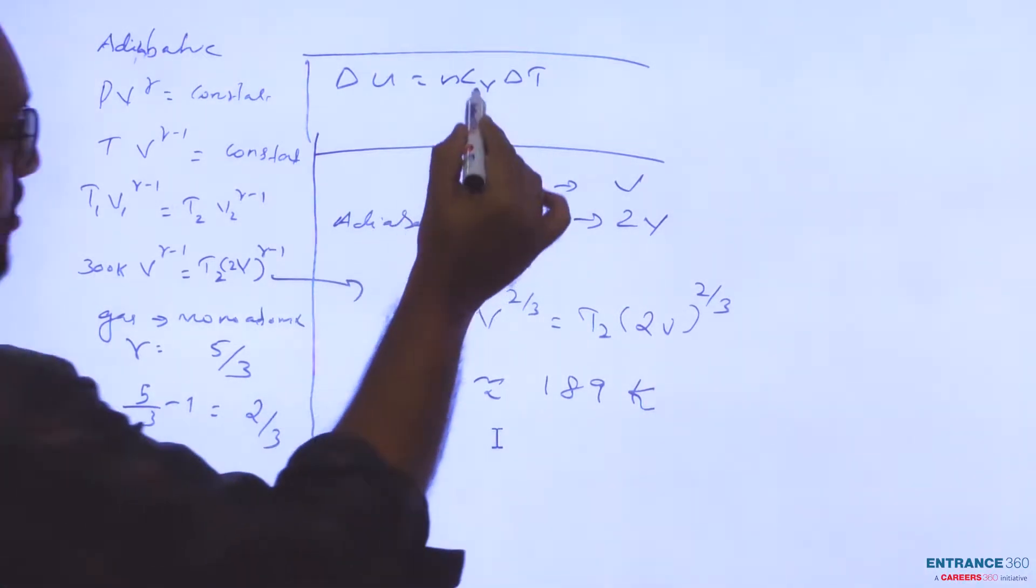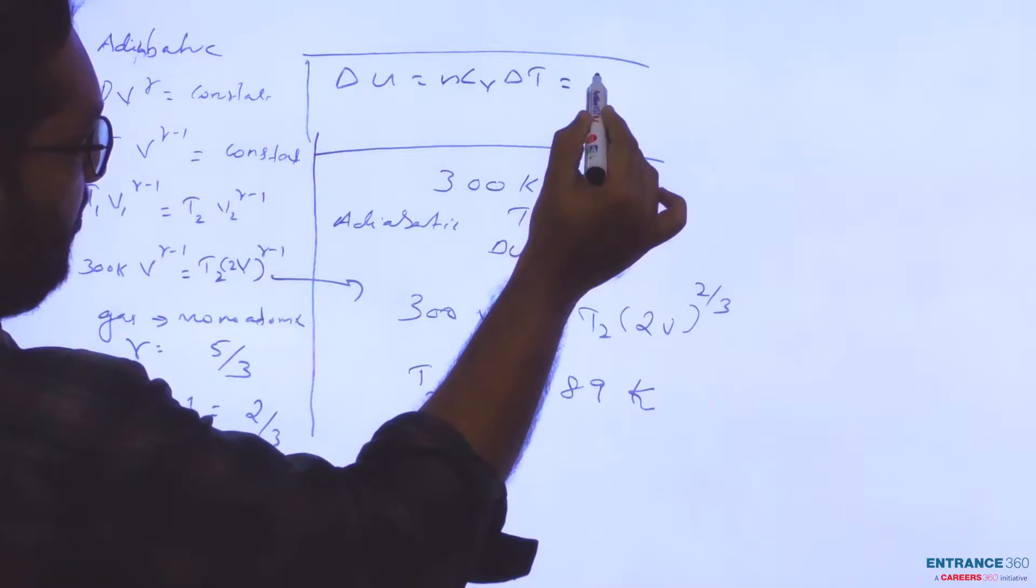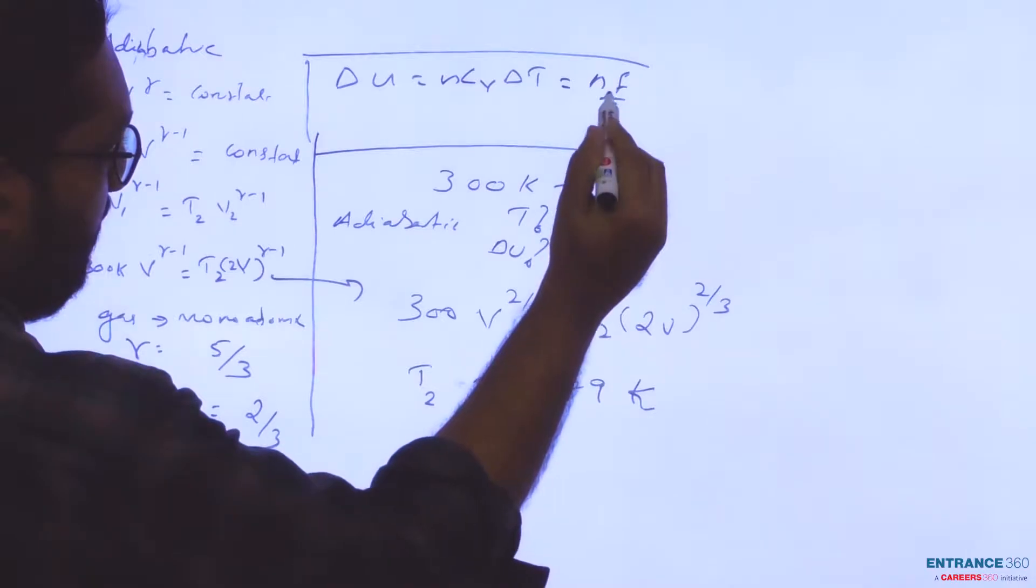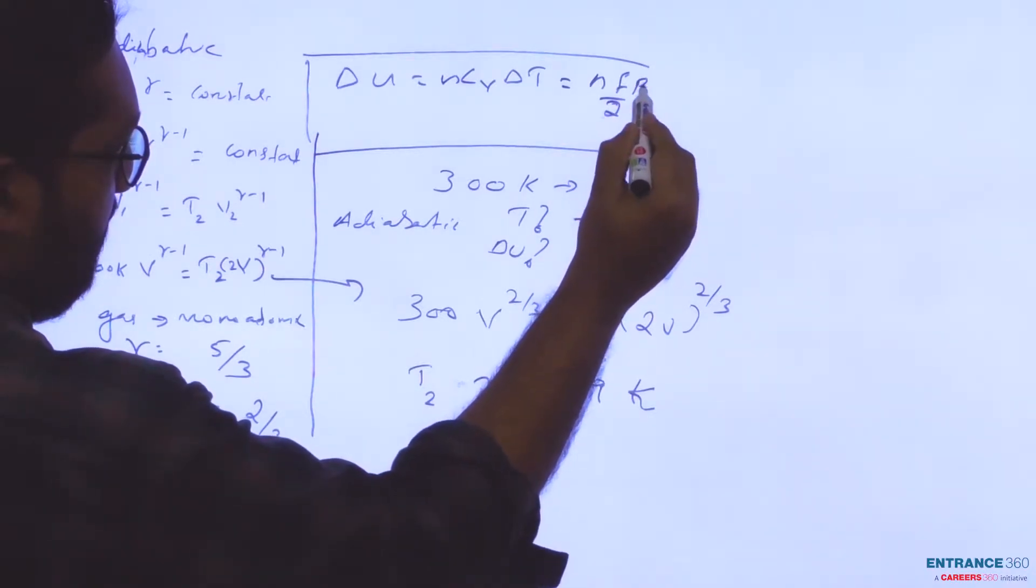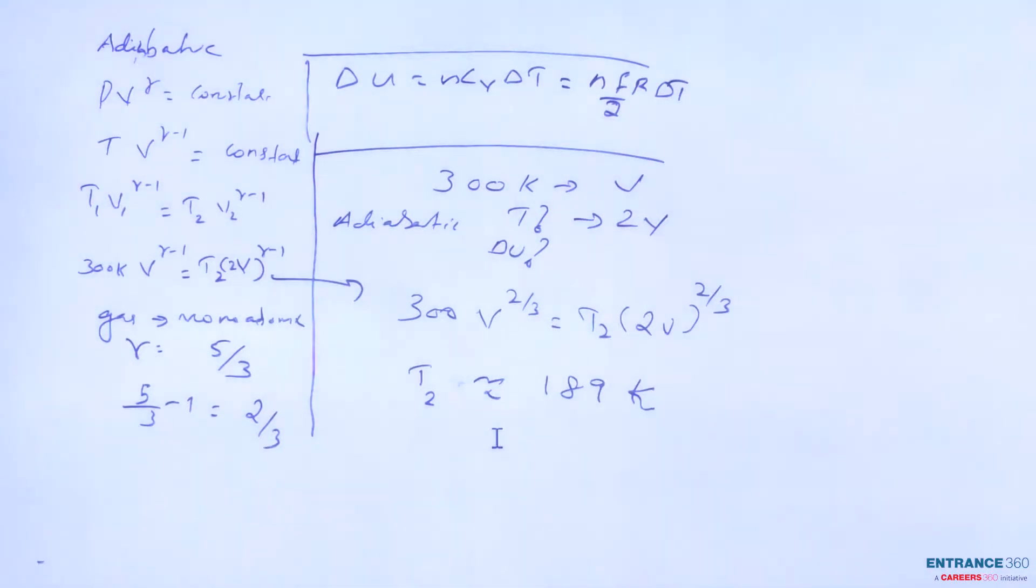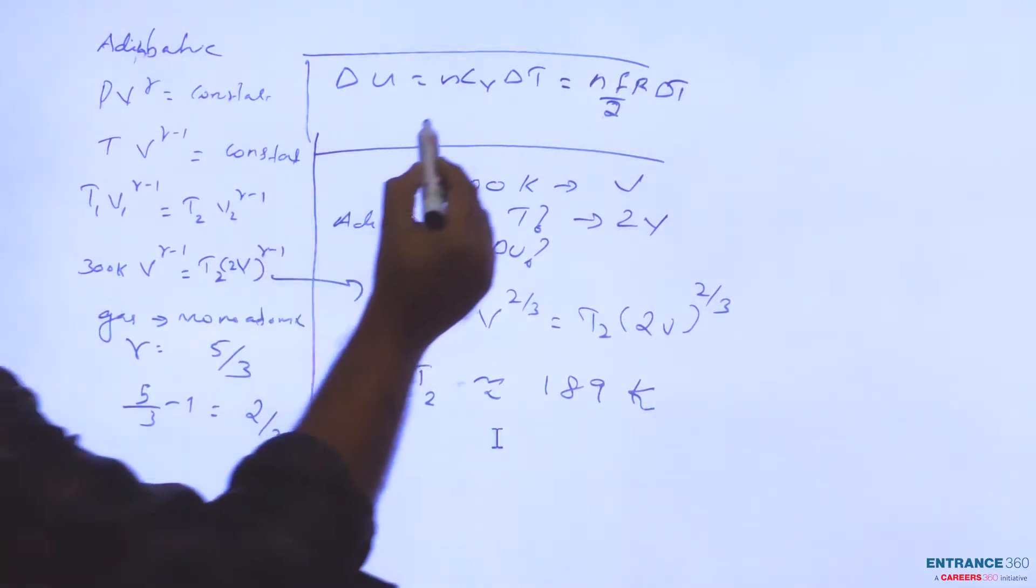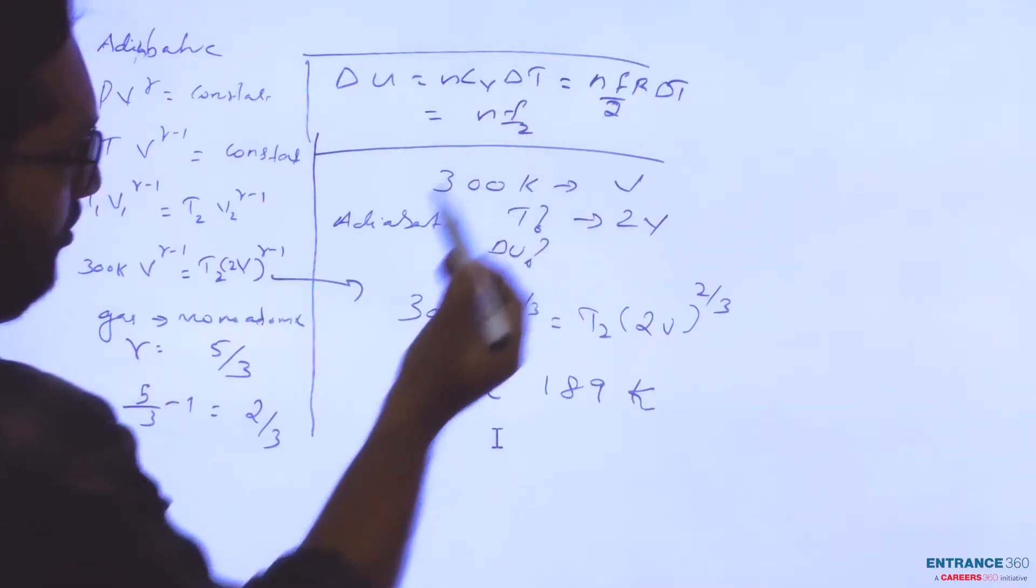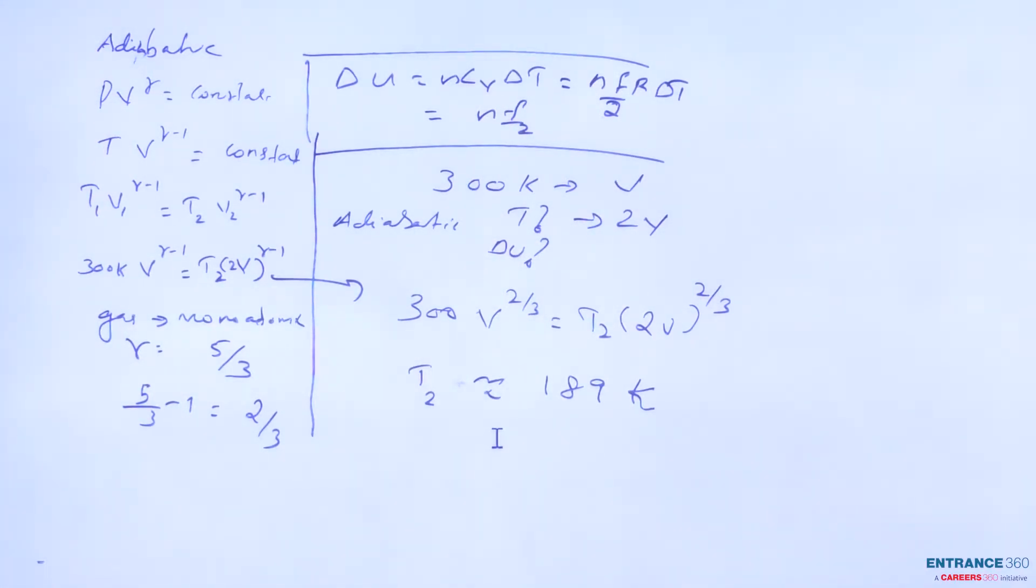The degree of freedom for a monoatomic gas is 3, so we can write n×3/2×R×ΔT.